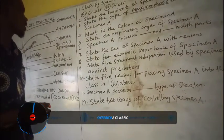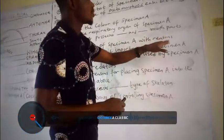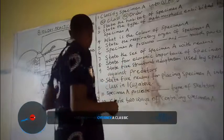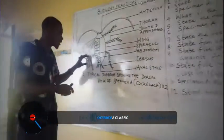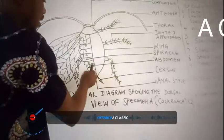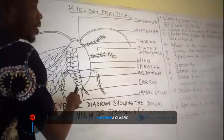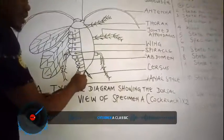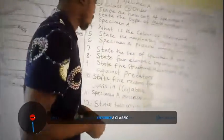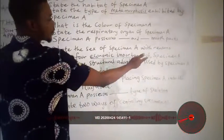The next question asks about the sex of specimen A with reasons. This specimen's wing extends beyond the abdomen, which indicates it is a male cockroach. Additionally, there is the presence of anal cerci, which also confirms it is a male cockroach.